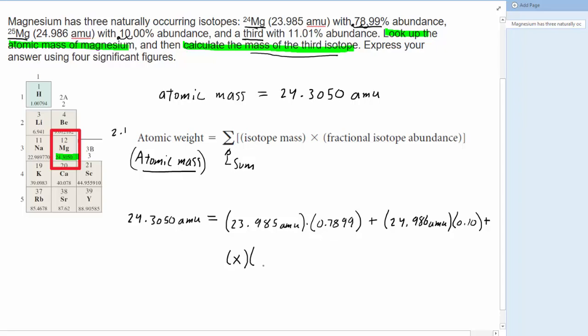So we know that 100% is going to equal the sum of the individual abundances. Now, the first isotope again had an abundance of 78.99%. The second had an abundance of 10%, and then the third we'll call y, we can actually figure out. So if we add up the 78.99 with 10, we're going to get of course 88.99%.